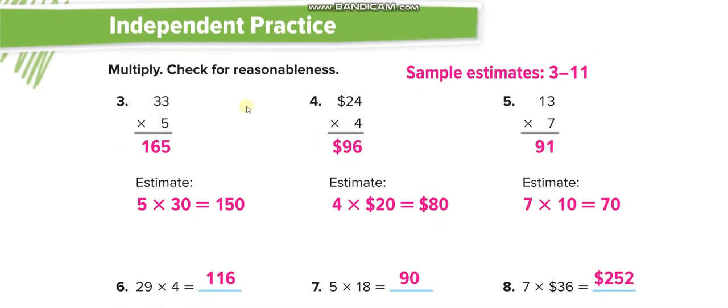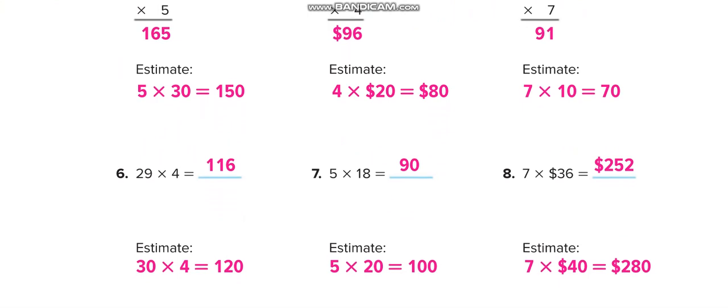Next page, independent practice. These questions also have estimations—if you want you can write, but not necessary. So this one: 5 times 3 is 15, 5 here and 1 up, and then again 5 times 3 is 15 plus 1 is 16. So guys, similarly like this, solve all these problems and then match your answers from this video.